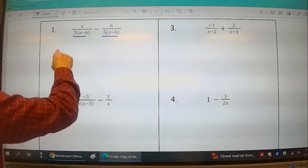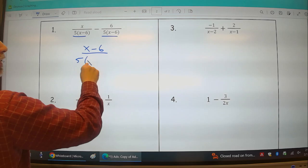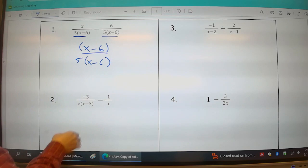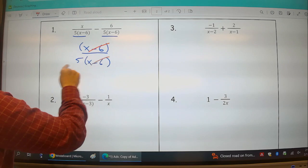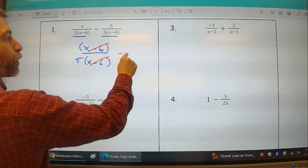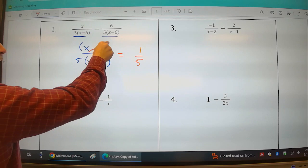But since I have an x minus 6 in the numerator and an x minus 6 in the denominator, you are allowed to simplify those. x minus 6 divided by x minus 6 leaves me with one fifth. Don't forget, when you simplify and eliminate a complete denominator or numerator, it's not zero, it's one.